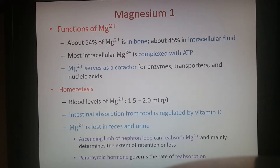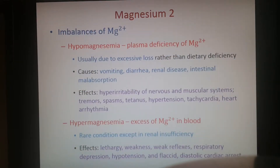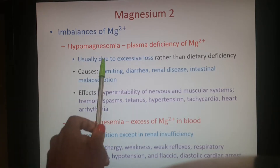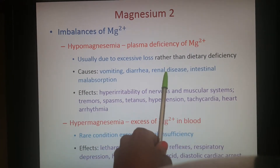Maintaining your levels of magnesium in the body is partially through intestinal absorption — absorbing magnesium from the foods you eat — which is regulated by vitamin D. Losing magnesium is usually through feces and urine. Too little magnesium is hypomagnesemia — a plasma deficiency of magnesium — usually due to loss rather than not taking in enough magnesium.